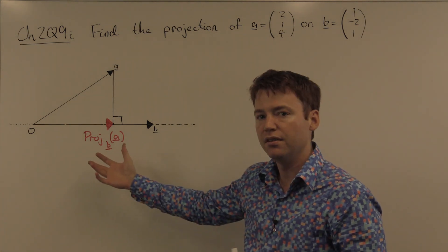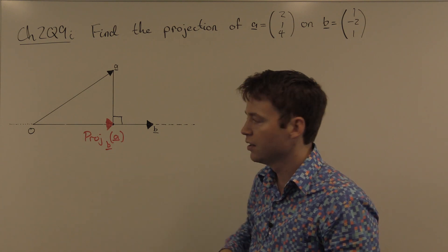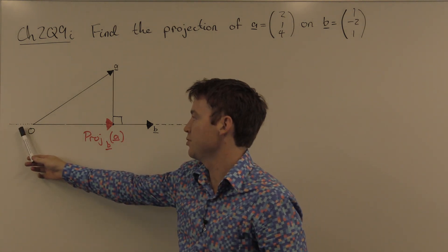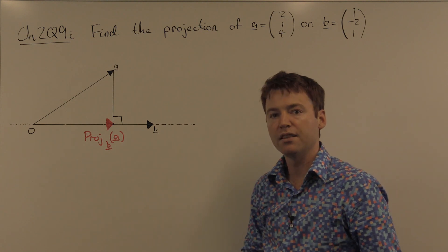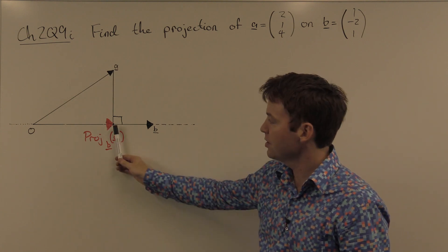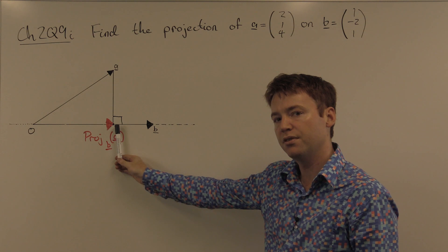Geometrically, the projection looks like this. You have the line through the origin and b, and the projection is the point on this line closest to a.